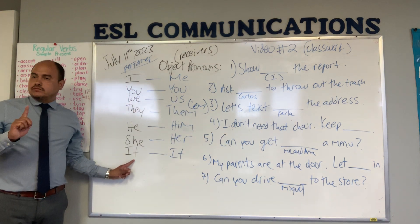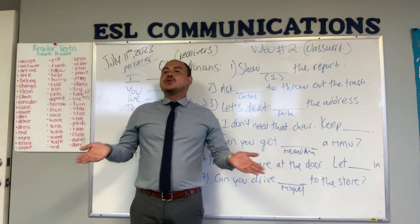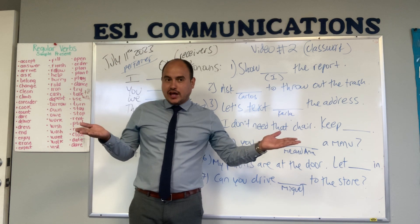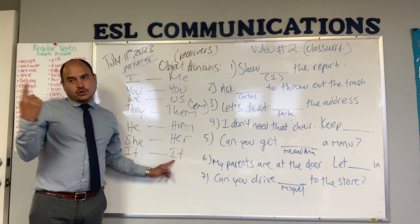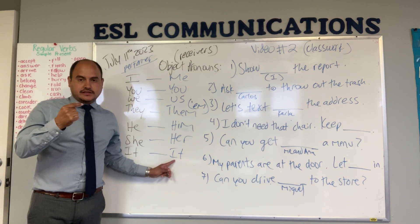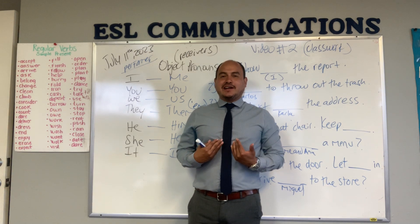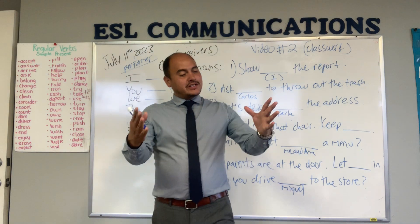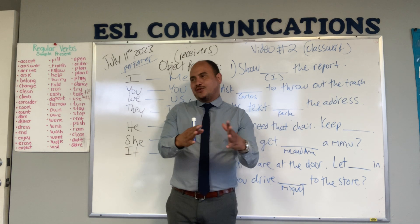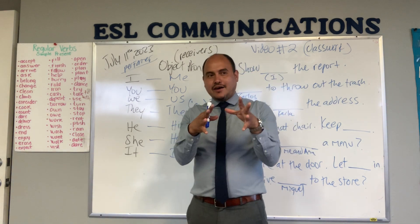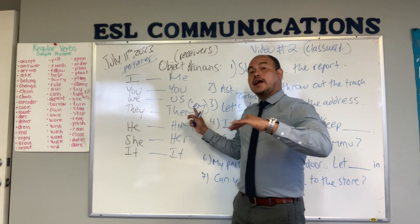Last one — 'it.' Una cosa: el performer y el receiver es lo mismo — 'it.' Example: do you like Houston, Texas? Houston es la ciudad, es una cosa. Yes, I like it. Imagine a friend brings you a gift — un amigo te trae un regalo. You open it and say: oh, thank you very much — I like it. Es una cosa. If there are two things in the box, dirías me gustan — I like them.